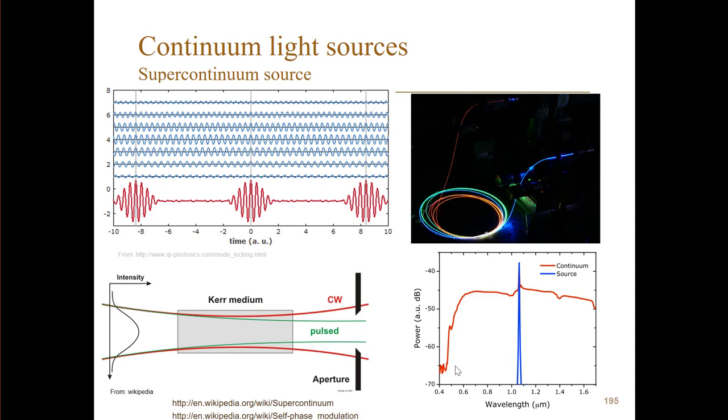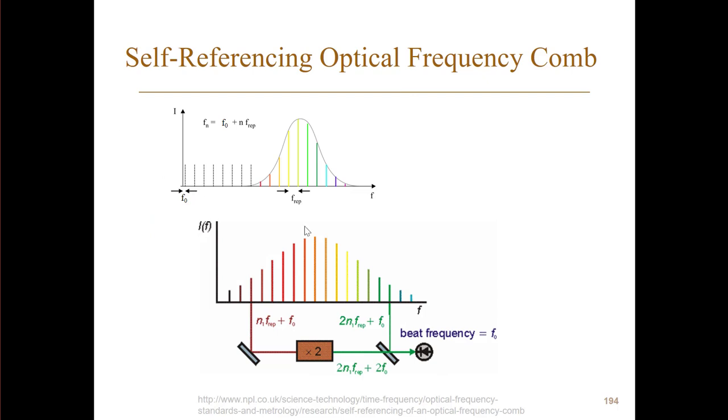And now we have a laser which spans from 600 nanometers to 1600 nanometers, which is more than one octave—I mean one octave would be from 600 nanometers to 1200 nanometers. So now we have a laser which is necessary to do this locking.